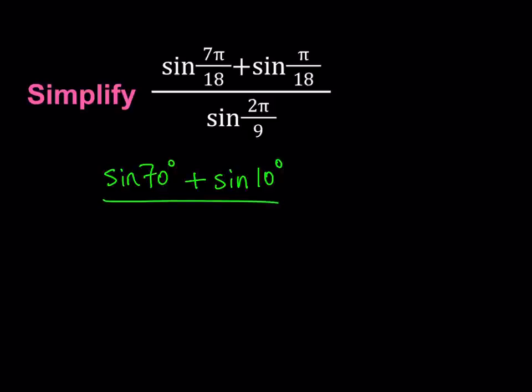...so this is equivalent to sine 10 degrees. And at the bottom, 180 divided by 9 equals 20, 2 times 20 equals 40. We're going to get sine of 40 degrees.